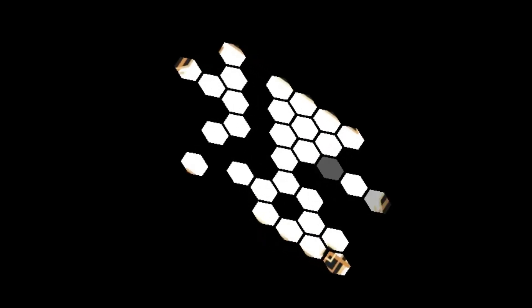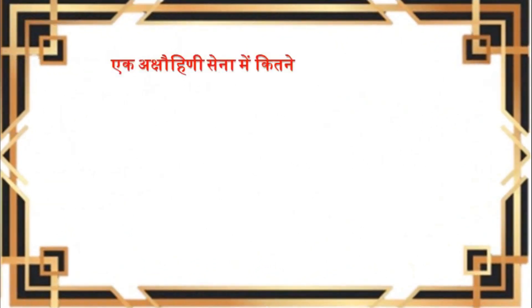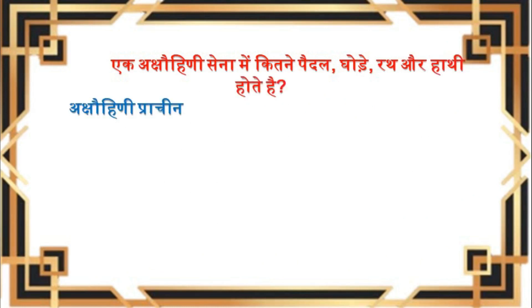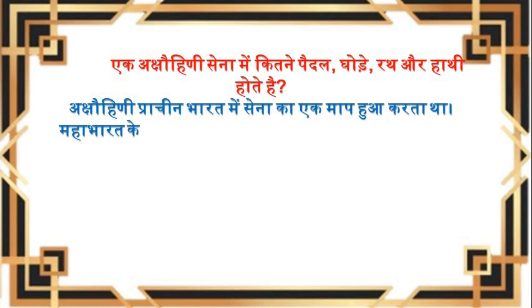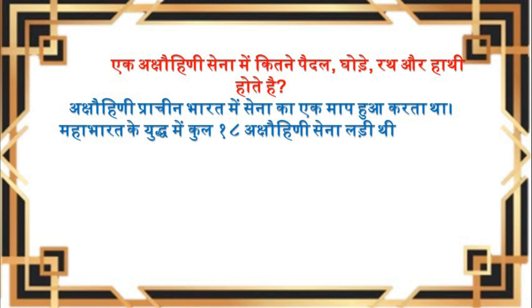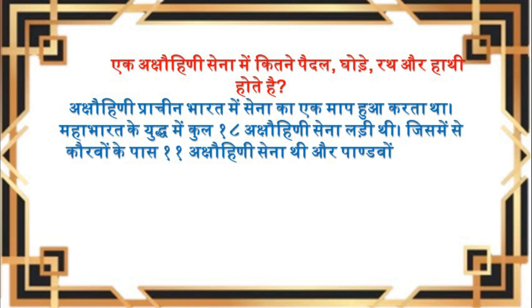एक अक्षोहिनी सेना में कितने पैदल, घोड़े, रथ और हाथी होते हैं? अक्षोहिनी प्राचीन भारत में सेना का एक माप हुआ करता था। महाभारत के युद्ध में कुल 18 अक्षोहिनी सेना लड़ी थी, जिसमें से कौरवों के पास 11 अक्षोहिनी सेना थी और पांडवों के पास 7 अक्षोहिनी सेना थी।